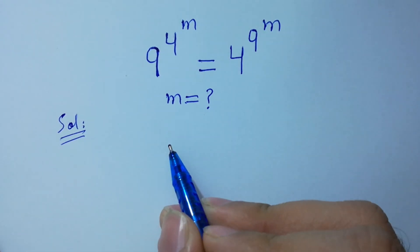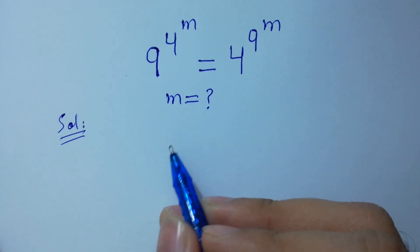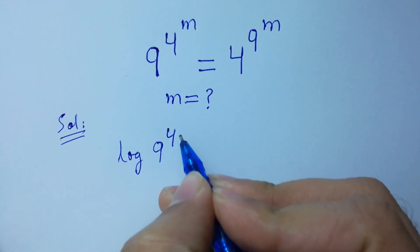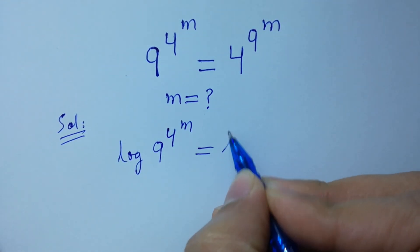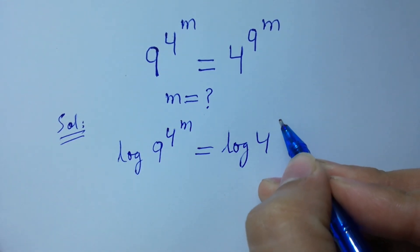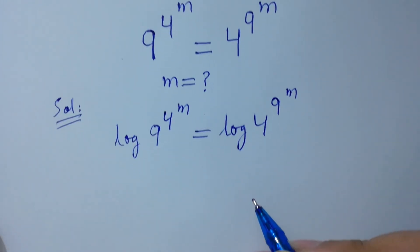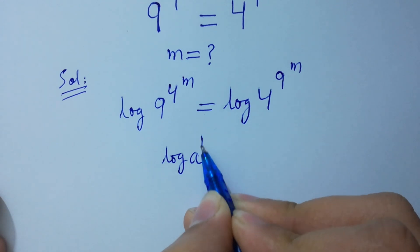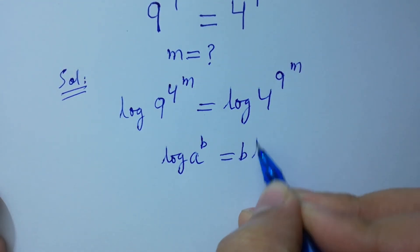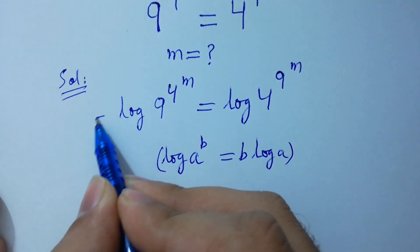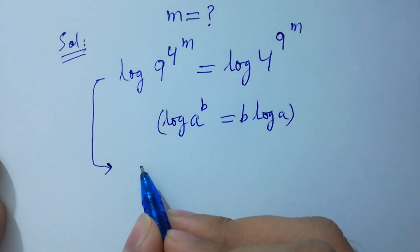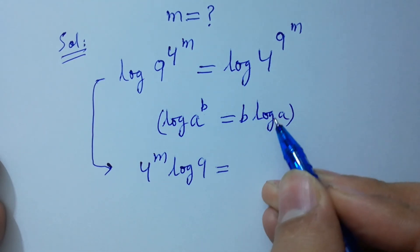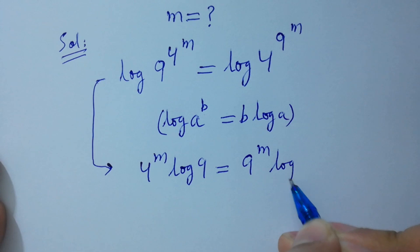To solve this, first of all, take log on both sides: log of 9 to the power 4 to the power m equals log of 4 to the power 9 to the power m. Since log a to the power b equals b log a, it will be equal to 4 to the power m times log 9 equals 9 to the power m times log 4.